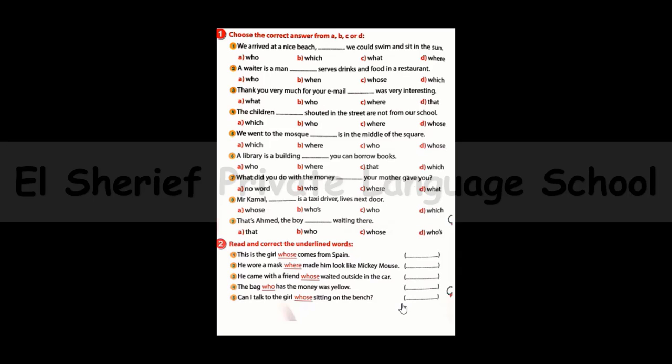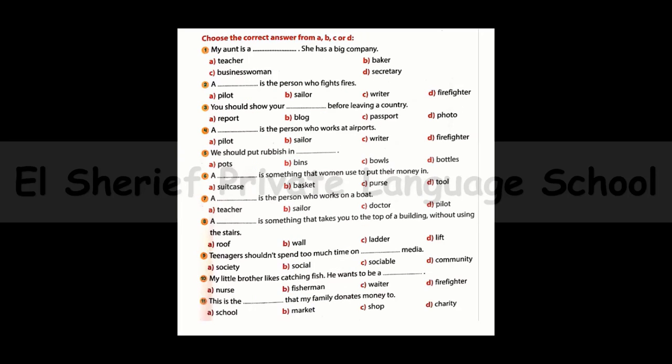Number five: Can I talk to the girl ___ sitting on the bench? It should be 'who is sitting on the bench' — using 'who's' meaning 'who is.' Now vocabulary exercises. Number one: My aunt has a big company — she is a ___. The answer is: businesswoman. Number two: A ___ is a person who fights fires. The answer is: firefighter.